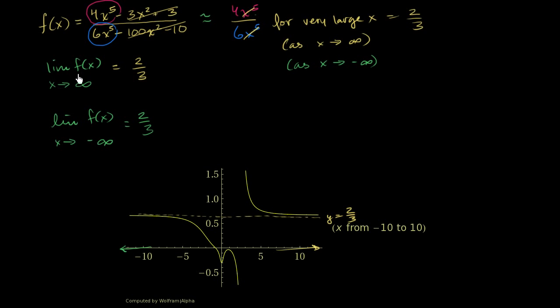We have a horizontal asymptote at y equals 2 thirds. Whether we take the limit of f of x as x approaches infinity, we get 2 thirds, and the limit of f of x as x approaches negative infinity is 2 thirds. So in general, whenever you do this, you just have to think about what terms are going to dominate the rest and focus on those.